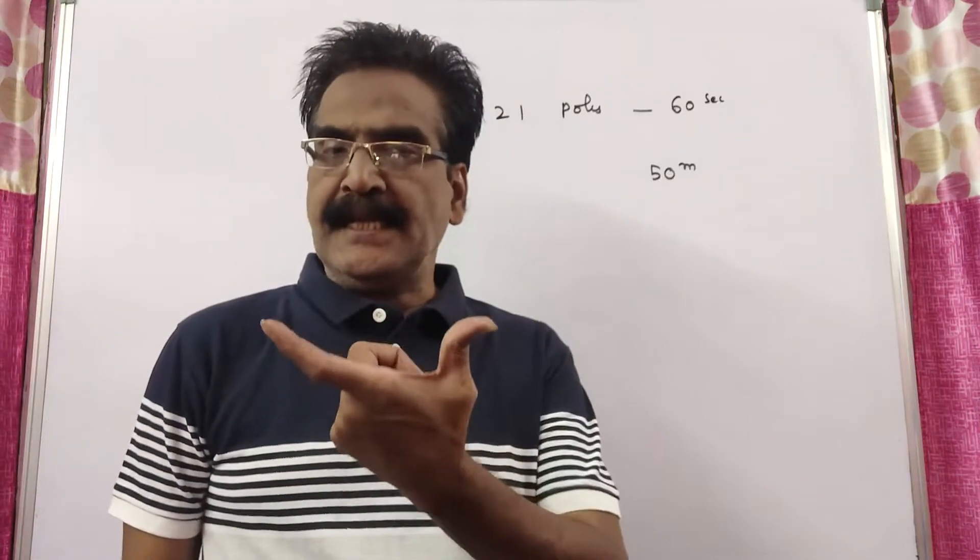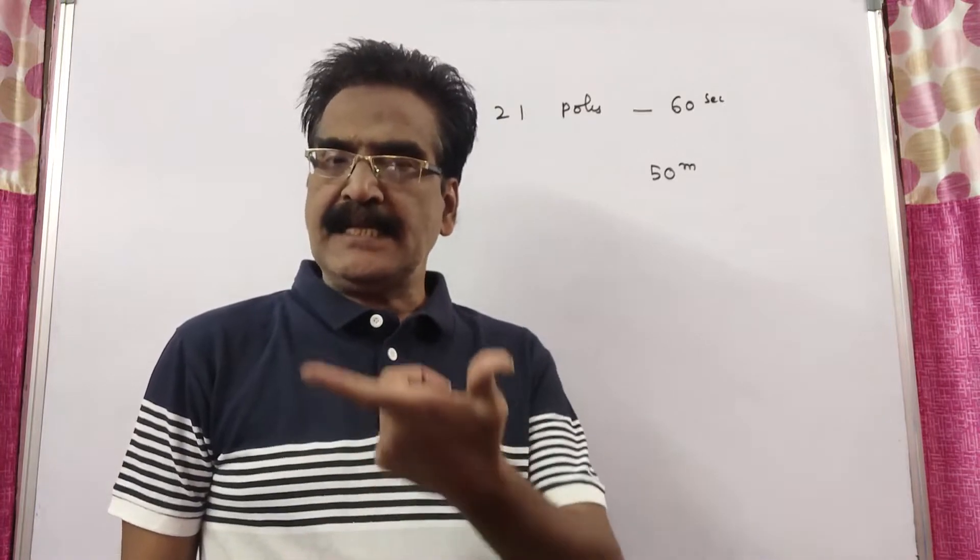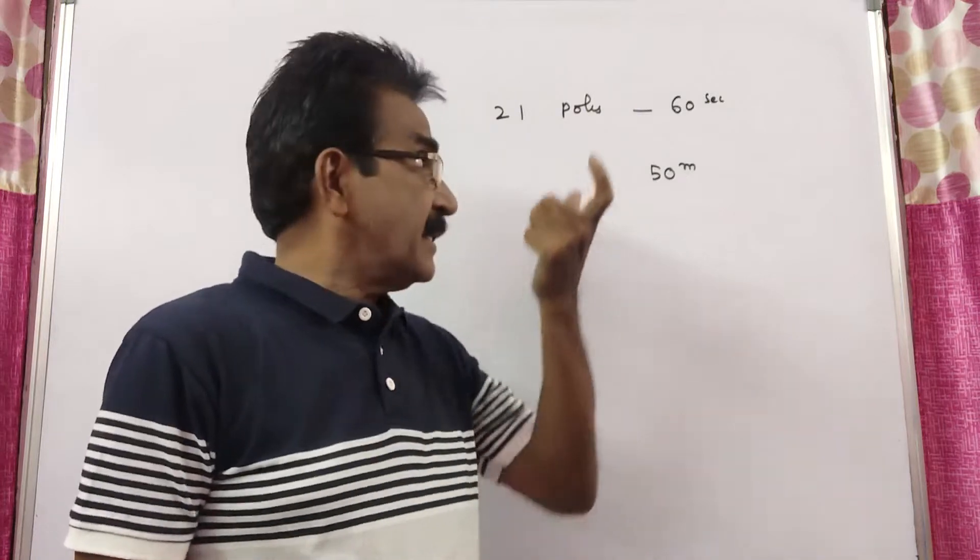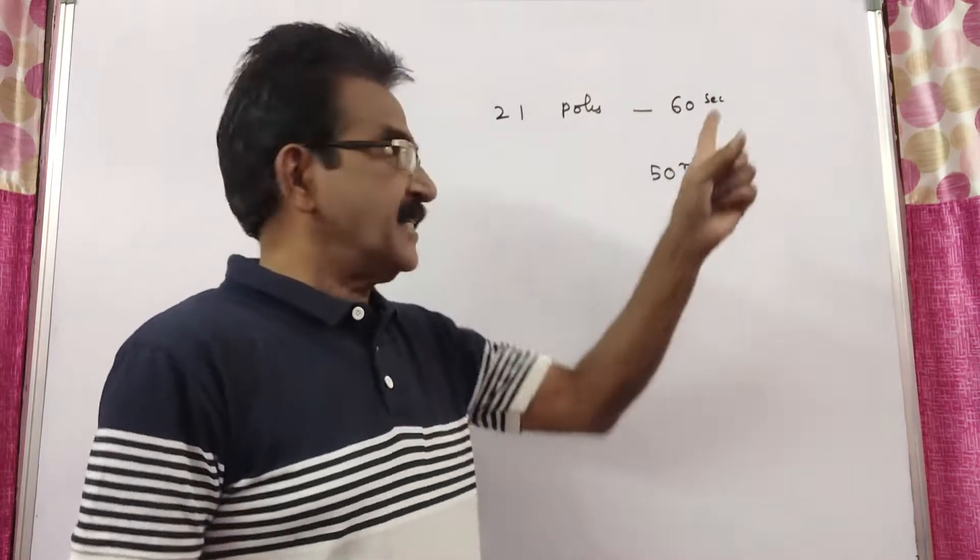Friends, a man in a train notices that he can count 21 poles, telephone poles, in 1 minute. That is in 60 seconds.